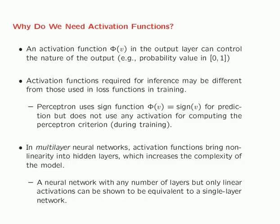An activation function in the output layer can control the nature of the output. For example, in the case of the perceptron, the sign activation converted a real value to plus 1 or minus 1, which was the class label. There are other types of activation functions which can create outputs of different forms — for example, if you have a bounded probability in 0 to 1, you can use a sigmoid function to create that value.